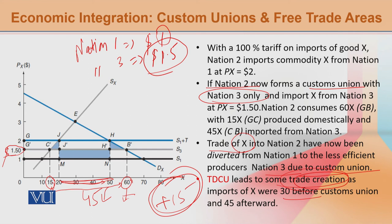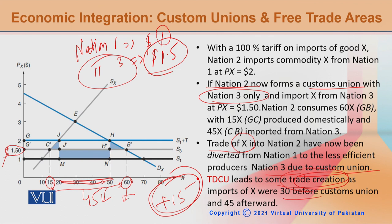So here you can see the overall scenario within the custom union. The one negative effect that has come is that as a nation, due to the custom union and preferential trade agreements, world resources have not been optimally used. You are giving more chances to a nation which is less efficient at the international level — and that nation is Nation 3, because Nation 3 is producing that commodity at a higher price. In the next module, we will discuss how the distribution of this effect works — overall, how consumer surplus changes, producer surplus changes, and how the third player, the state, is affected.